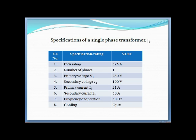The specifications of a single-phase transformer are given in a table: KVA rating is 5 KVA, number of phases is single phase, primary voltage is V1, secondary voltage is V2, primary current I1 is 21 A, secondary current I2 is 50 A, frequency of operation is 50 Hz, and cooling is open — meaning air cooling. This completes the transformer chapter.